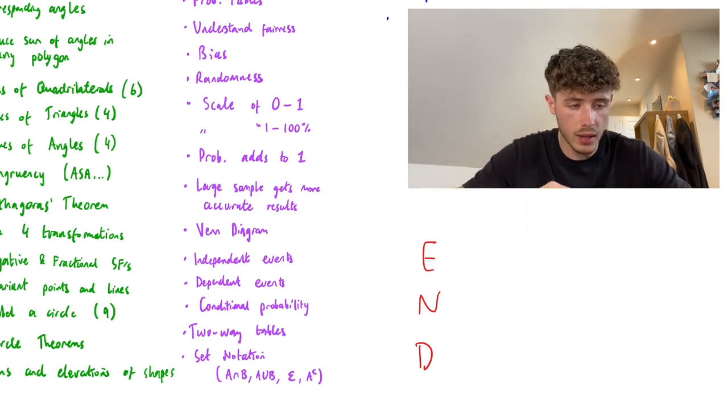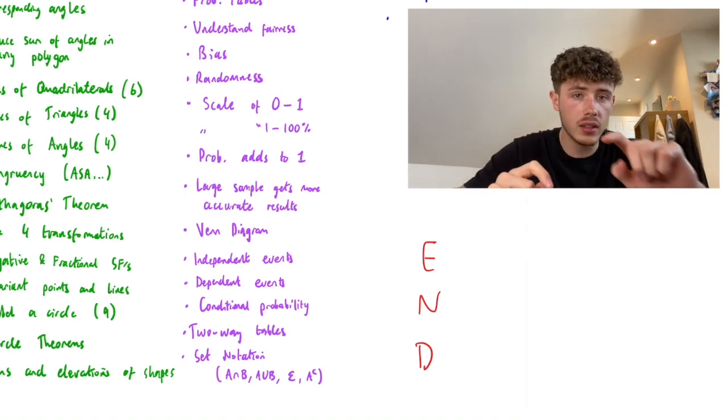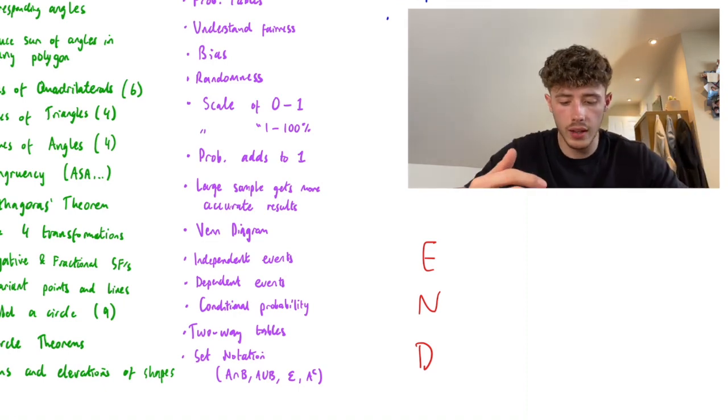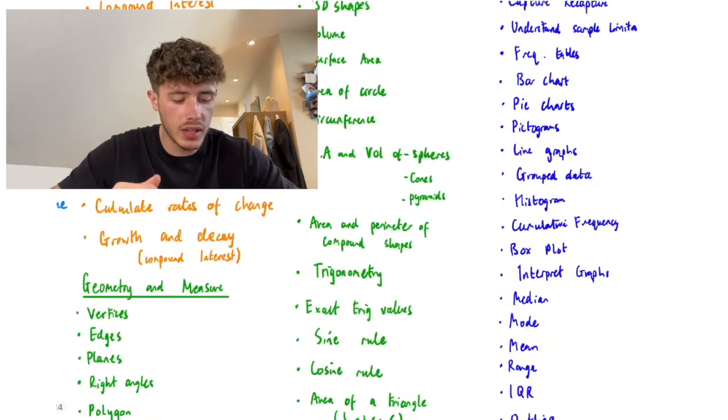This is the universal set, the little E sign, and then A to the C, or with a little dash - sometimes it's A complement, which means not A. And then final one, statistics on the far right.